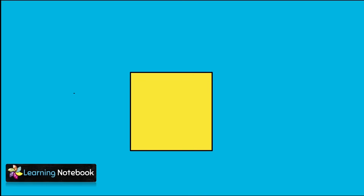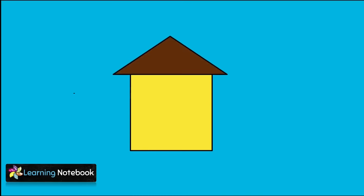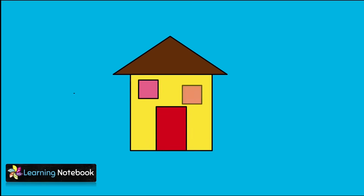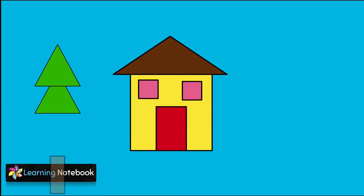First, we will make a beautiful house scenery with the help of shapes. Take a blue colored sheet. Cut and paste a big yellow square and then a brown colored triangle to form a house. Now take a red rectangle to form the door of this house. Next, cut two small pink squares for four windows.